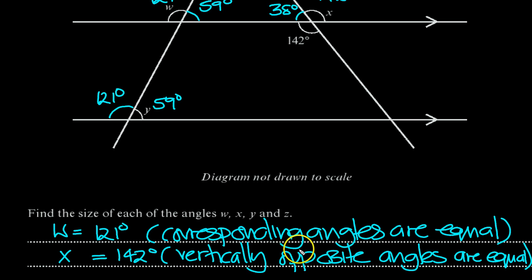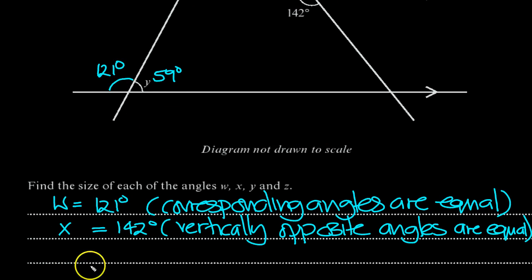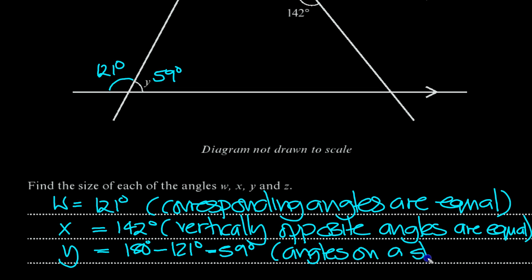And then X is next, so what did that equal? It was 142 at the top of the picture here. And that was because vertically opposite angles are equal. And that's because the angles on a straight line add up to 180 degrees.